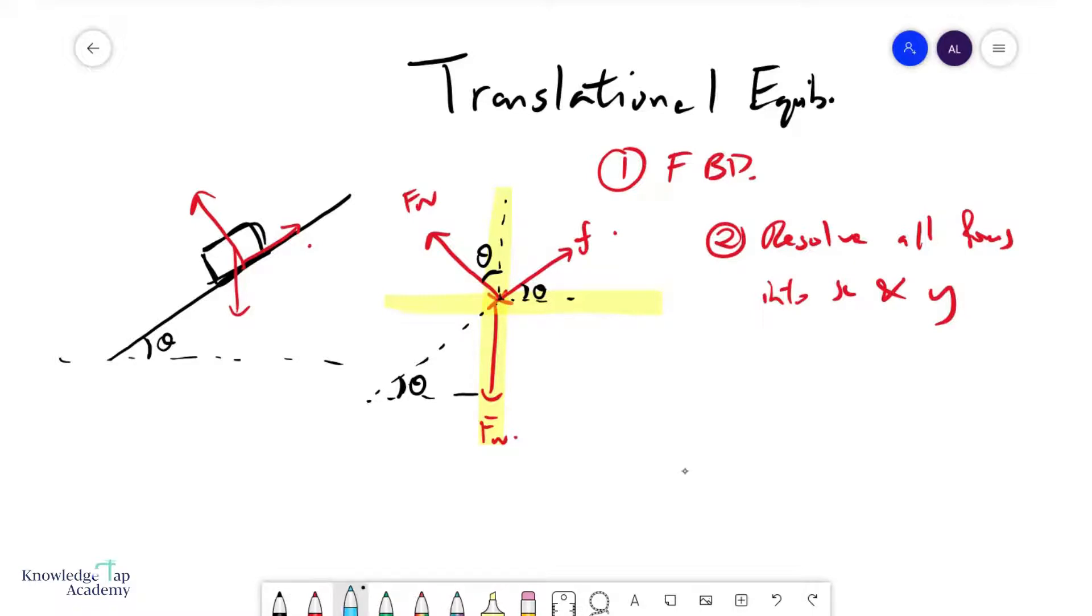So we can now split the friction and the normal. This would be F cosine theta. This will be F sine theta. This over here will be Fn cosine theta, and this will be Fn sine theta.